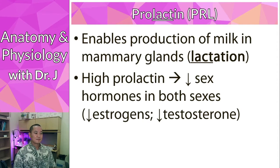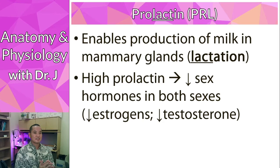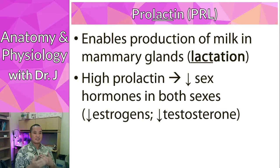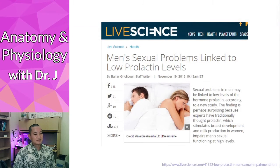Abnormal prolactin decreases sex hormones in both sexes — it decreases both estrogens and testosterone. The interesting thing with all these hormones is that if you have too much of a hormone, you have these negative effects on health, and if you have too little, you also have other effects. Too much prolactin causes a drop in testosterone and estrogens.